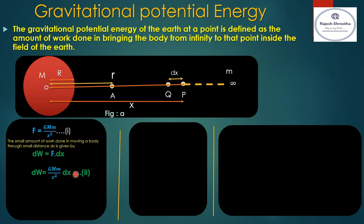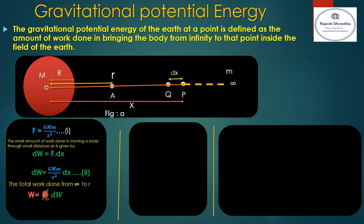After calculating the small amount of work done, we calculate the total amount of work done. The total work done from infinity to r can be written as W = ∫(∞ to r) dW, and substituting the value of dW it becomes W = ∫(∞ to r) GMm/x² · dx.